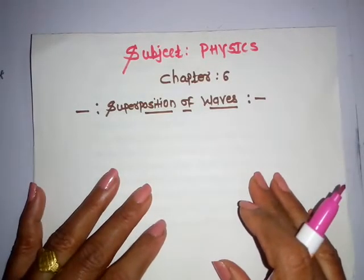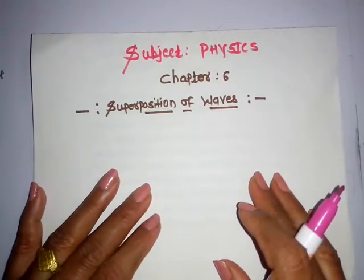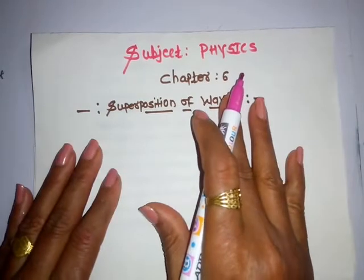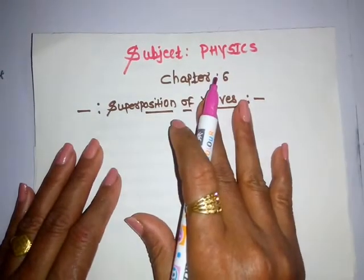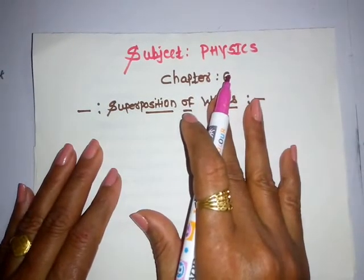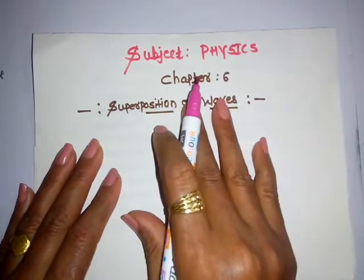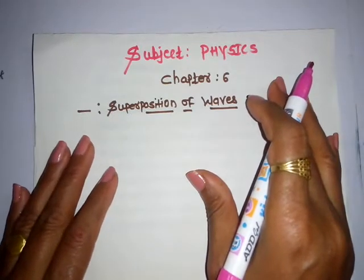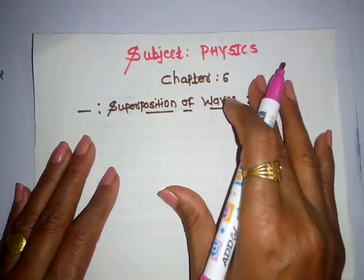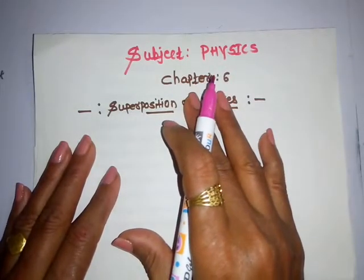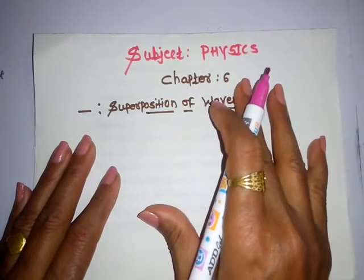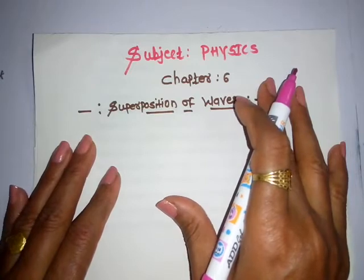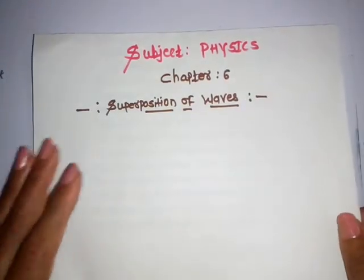Hello my dear students. We are learning physics, chapter number 6: Superposition of Waves. This is the last lecture from this chapter because the theoretical part is now completed. In today's lecture, we are going to solve some important numericals from this chapter. But before solving numericals, let us revise some important formulas that will be helpful at the time of solving the numericals.